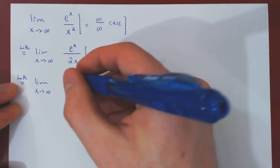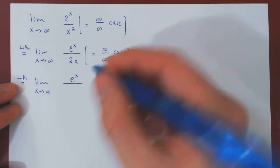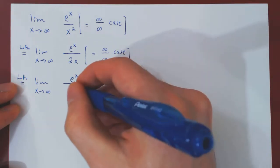The derivative of e to the x, as we've said before, is e to the x. The derivative of 2x is simply 2.